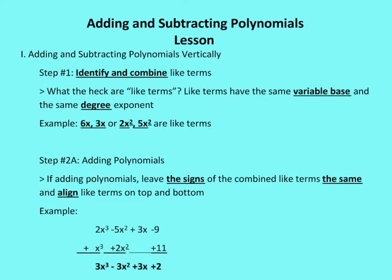When we're adding polynomials, we're going to leave the signs of the combined like terms the same and align the terms on the top and the bottom. So I'm going to orient them from the term with the highest exponent to the lowest — exponent 2, 1, and then the constant. There's a space here because there's no x value with just a 1 as the exponent, and then plus 11 as the constant. I align the like terms in the top and bottom.